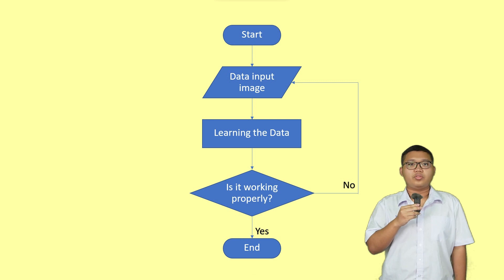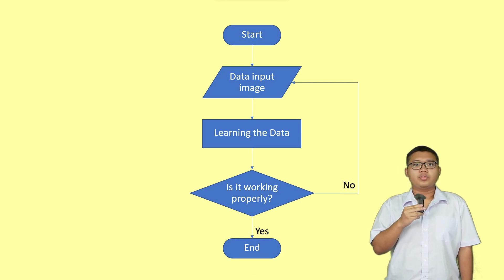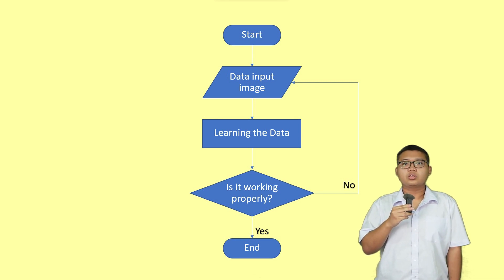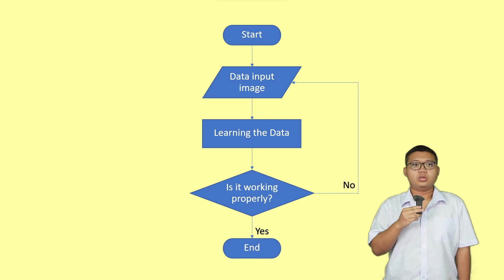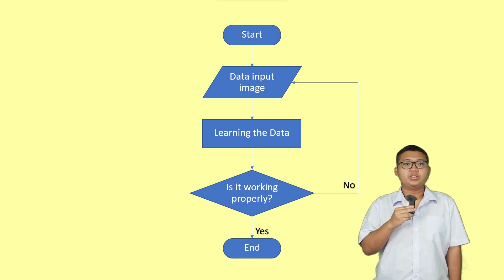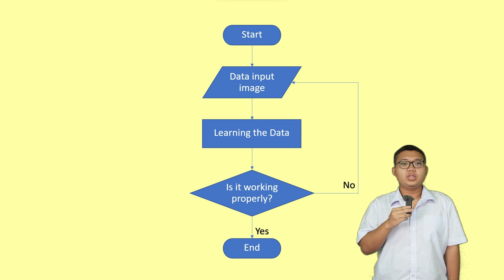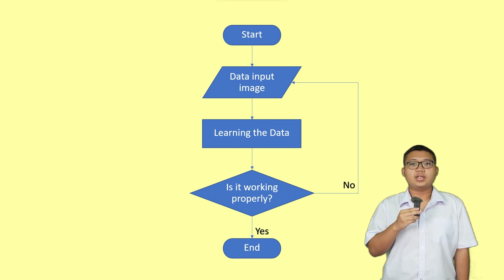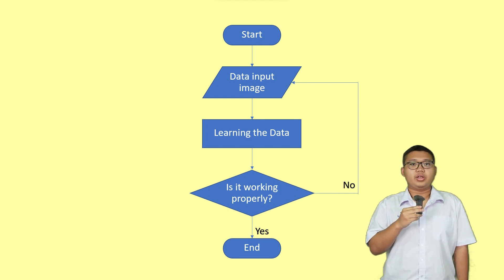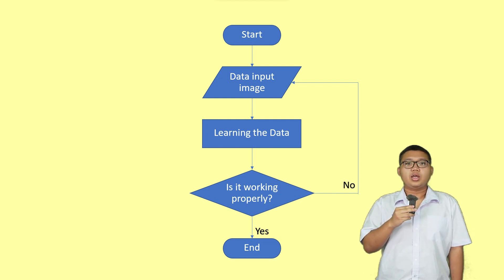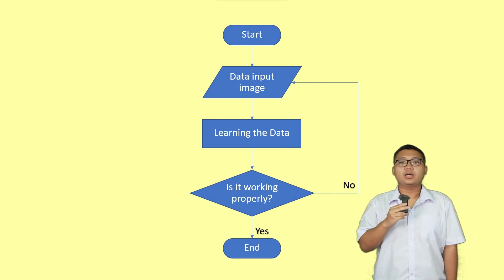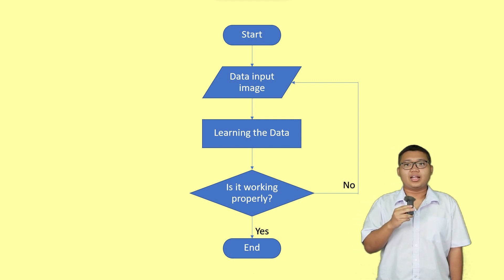Firstly, collect photos of food. The photos should be clear and contain all standard components. Then put the image into the program so that AI can learn from the pictures we send. By comparing the images, AI will identify the components in the picture and analyze what they are.